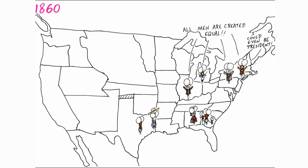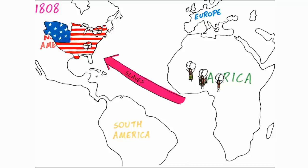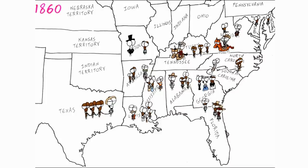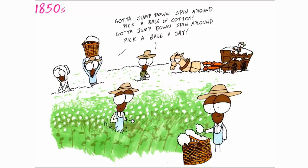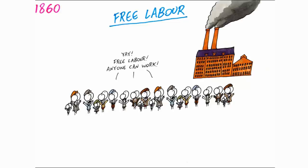After independence, the states in the North looked against slavery, many believing it to be contradictory to the ideals of a republic. The importing of enslaved people to the United States was prohibited in 1808, but the internal slave trade in the southern states continued strongly. With the invention of the cotton gin, used for quickly and easily processing cotton, the cotton industry took off in the South, fuelled by slave labour.